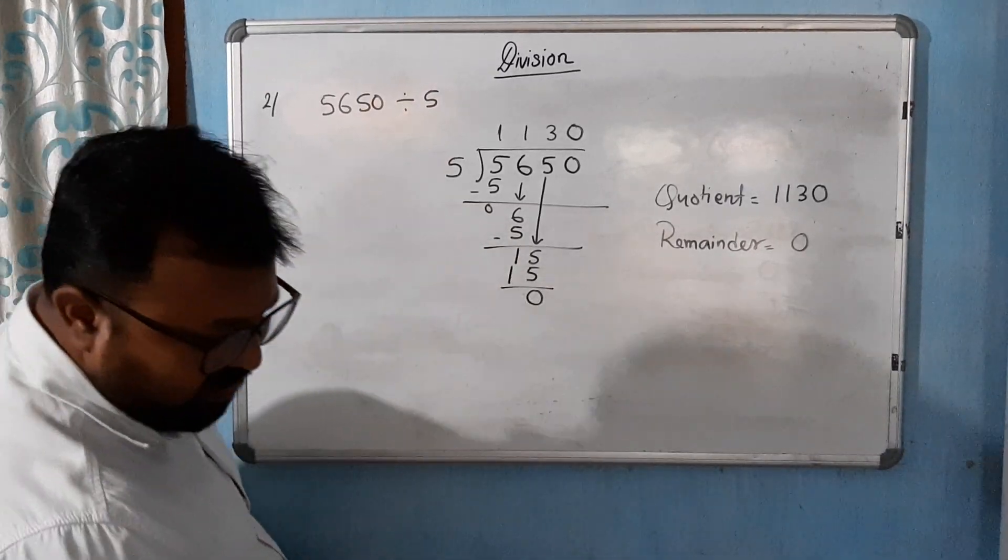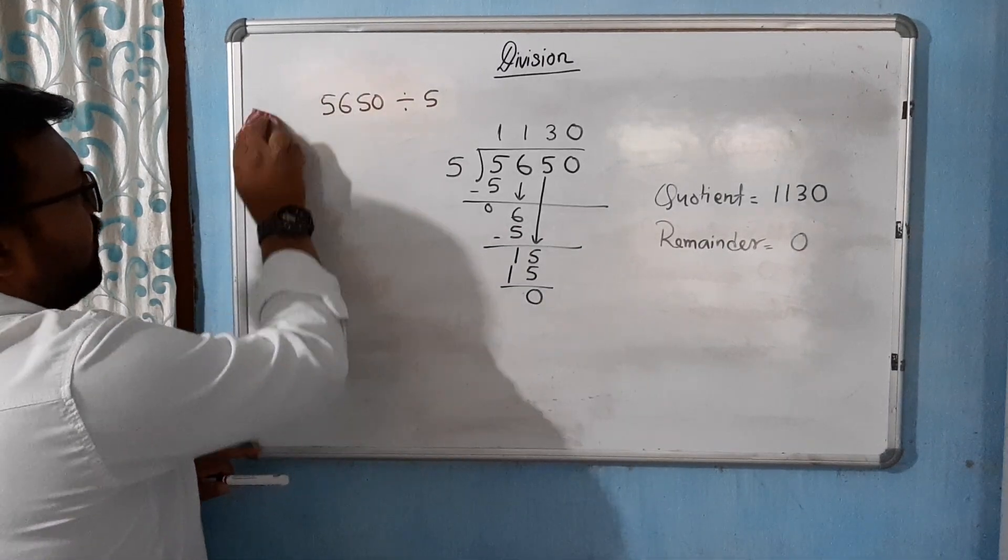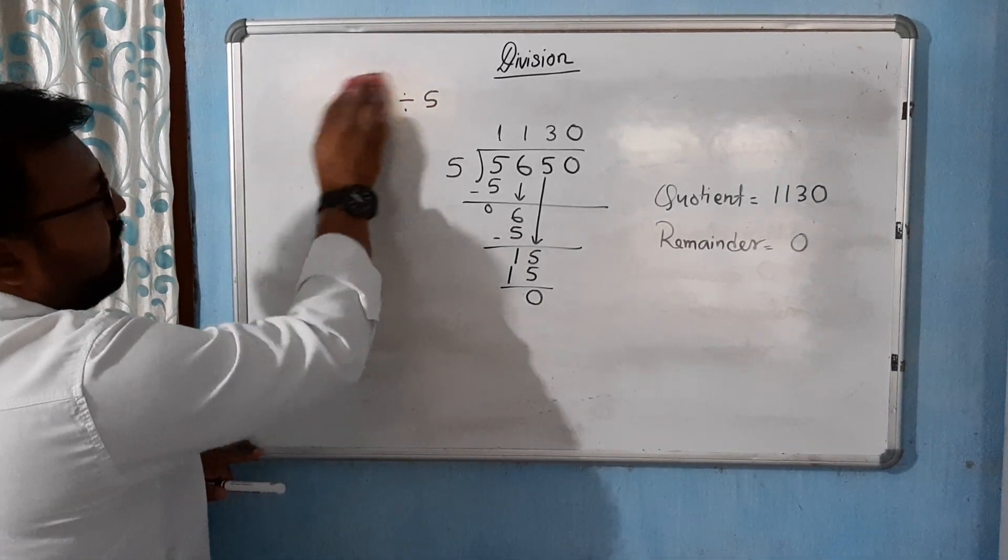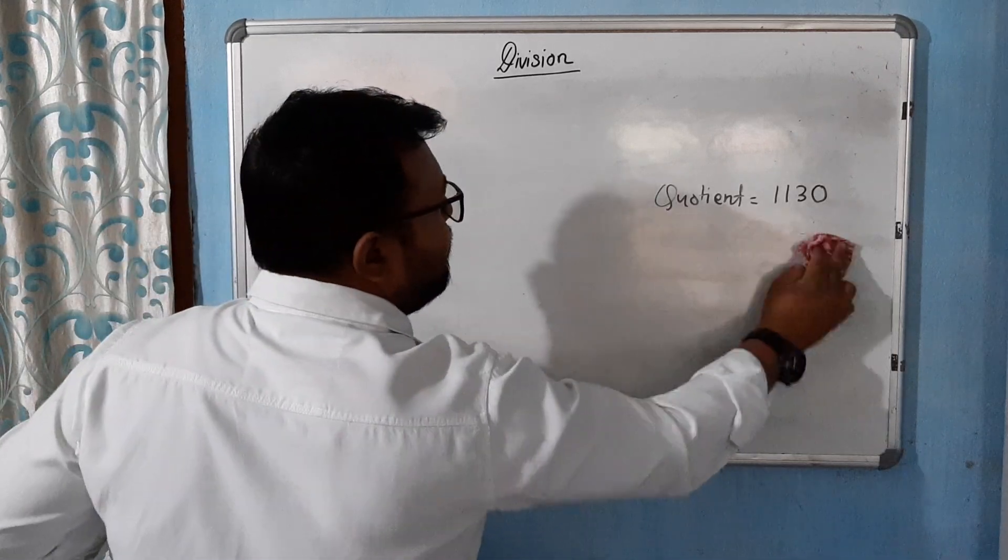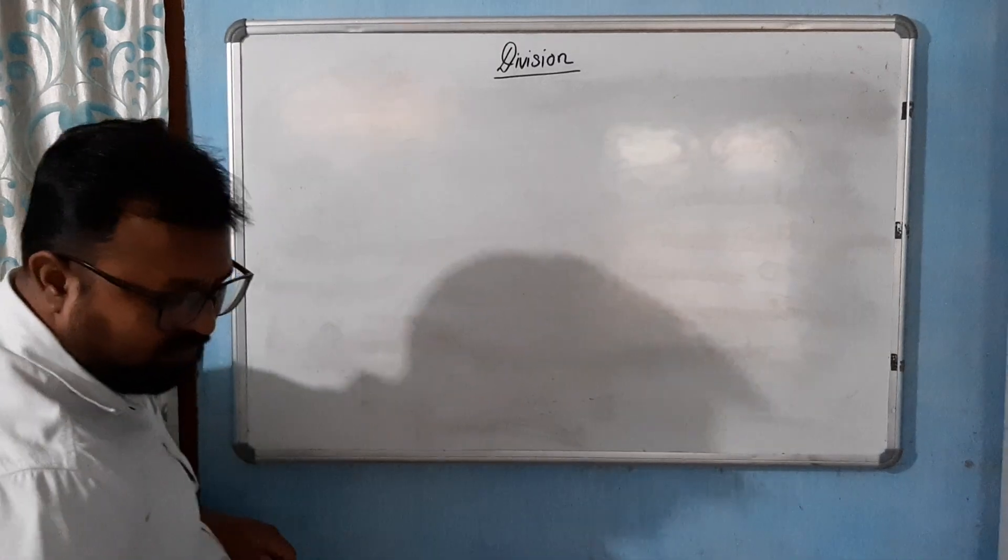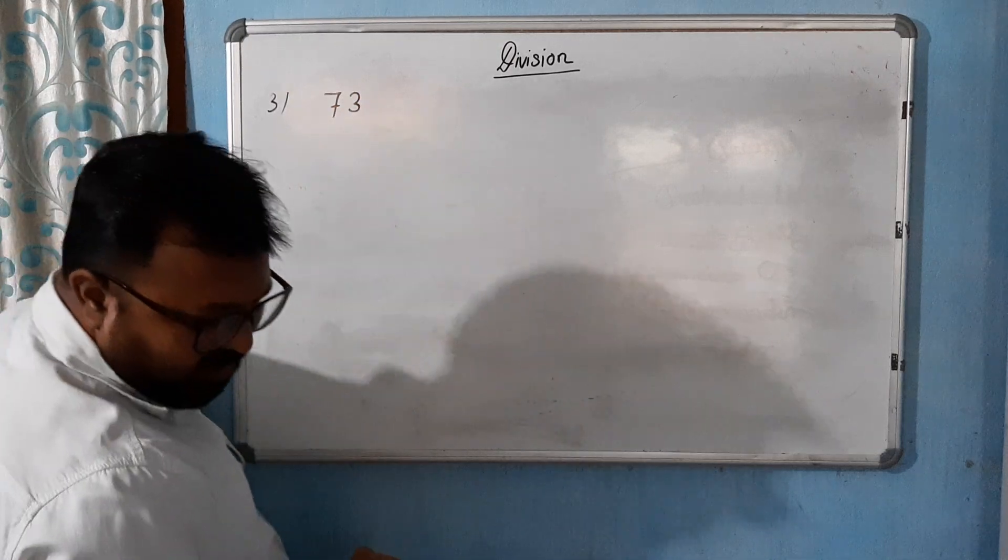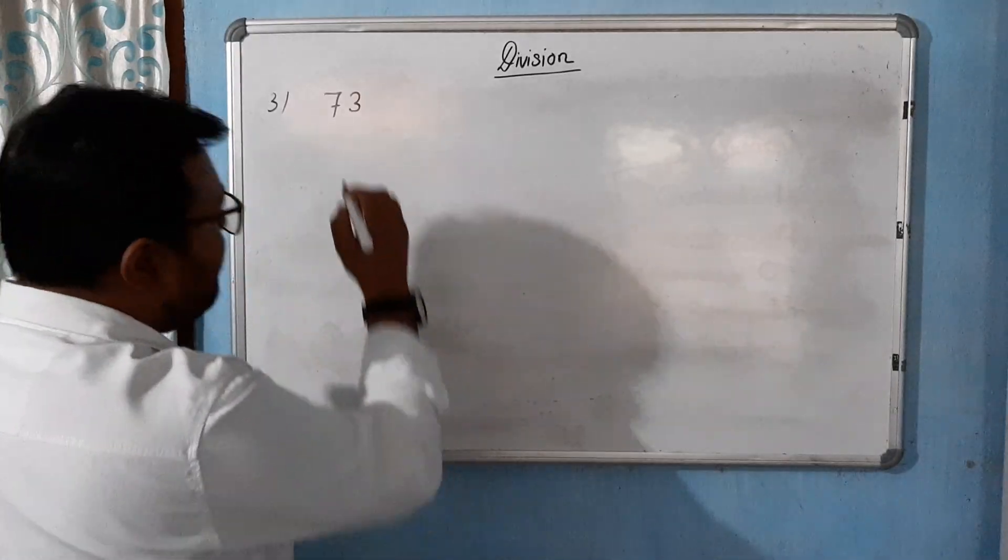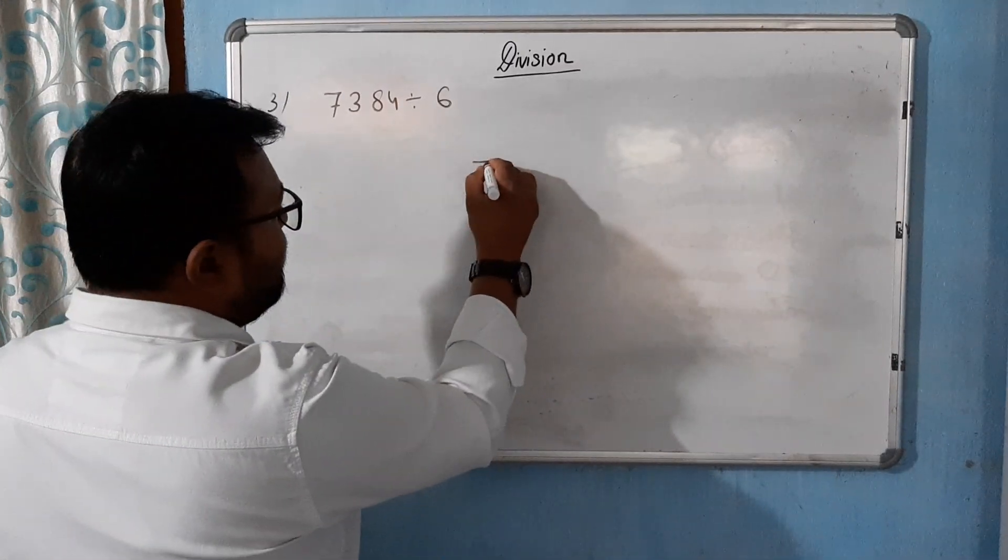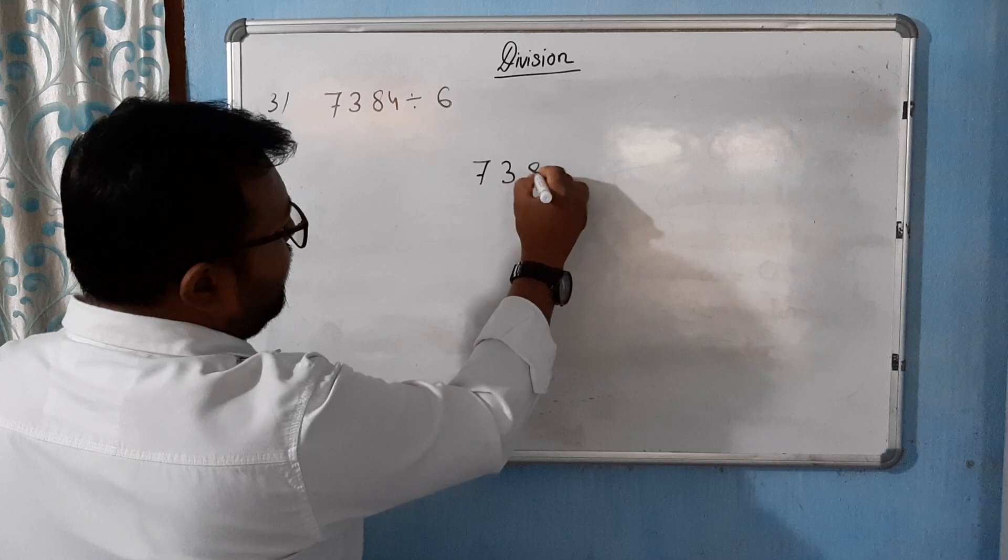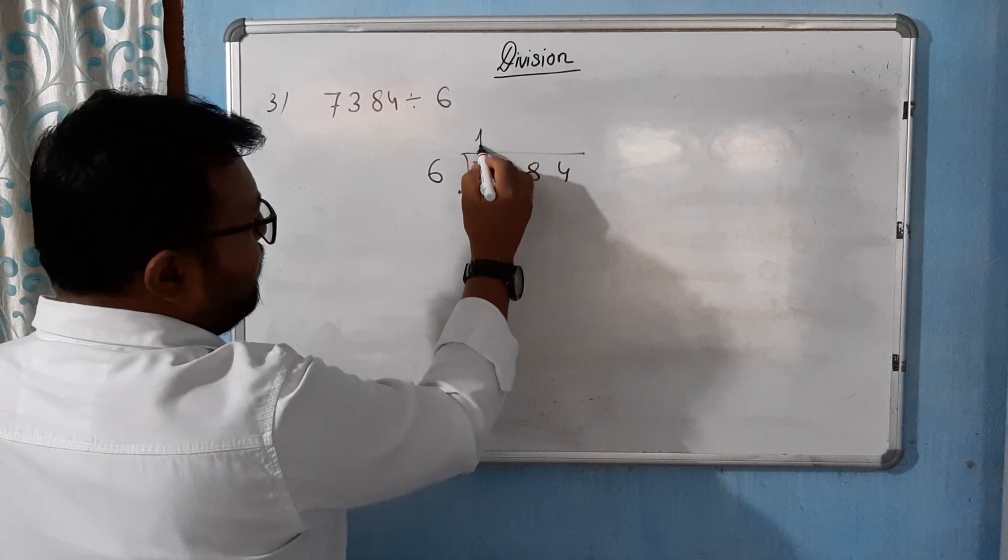Clear, now again, let's go to that question. 7384 divided by 6.